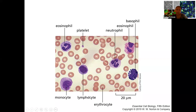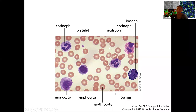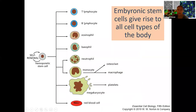Blood cells are all created from hemopoietic stem cells found in our bone marrow. Depending on the environmental cues, you get different percentages of each cell type originating from that same stem cell population. They all look very different depending on their function and work in very different ways.